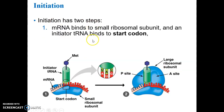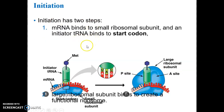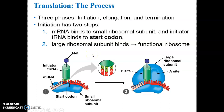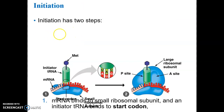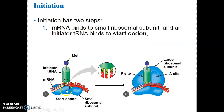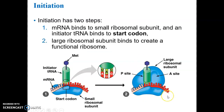To recap initiation: the mRNA molecule binds to the small ribosomal subunit, and the initiator tRNA binds bringing in its amino acid. The tRNA binds to the start codon - the triplet of bases that initiates polypeptide synthesis on the mRNA molecule. The large ribosomal subunit then binds, and it has a site for binding of the next tRNA molecule.